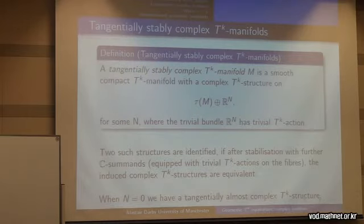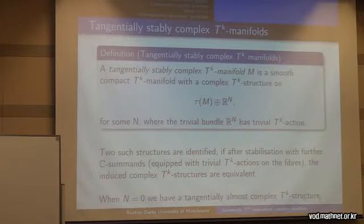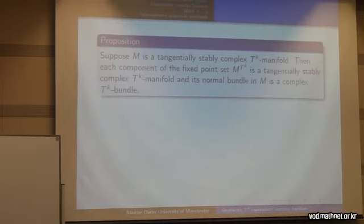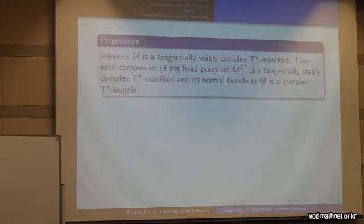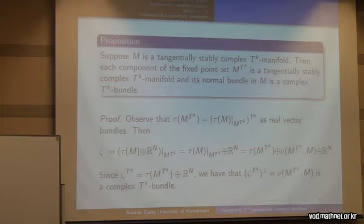You might think it's slightly strange that we want the trivial action — why not stabilise with representations if we're doing equivariant topology? The reason is due to the next proposition: if we have such a manifold, then its fixed point set is also a tangentially stably complex TK manifold with obviously trivial action. And more importantly, its normal bundle is a complex TK bundle on the nose. There's a short proof; if we were to stabilise with respect to representations, this would not be true.